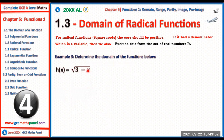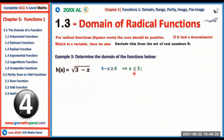For example, f(x) = √(3 − x). The function is defined only if 3 − x ≥ 0. Solving this inequality: −x ≥ −3, and dividing by a negative number reverses the inequality sign, giving x ≤ 3. The domain is all real numbers less than or equal to 3.